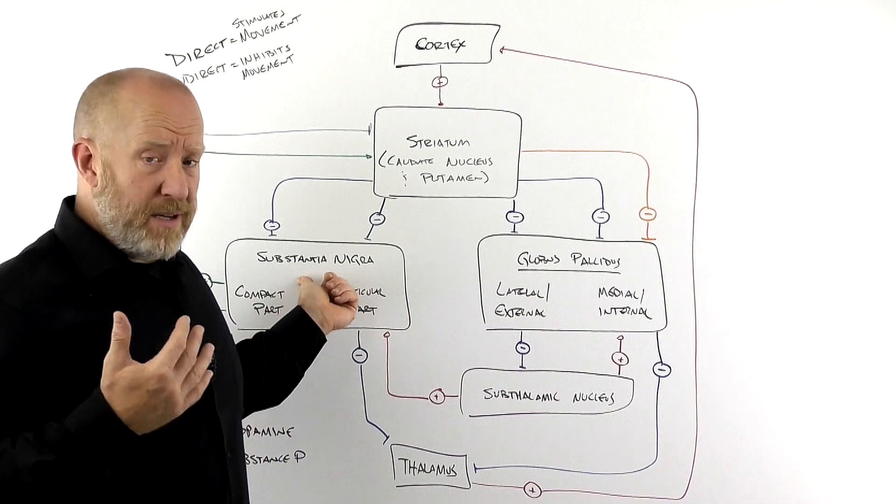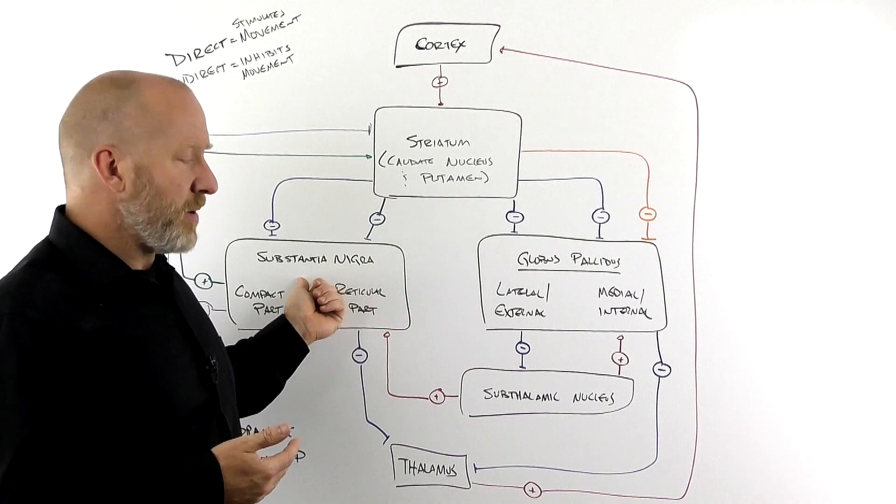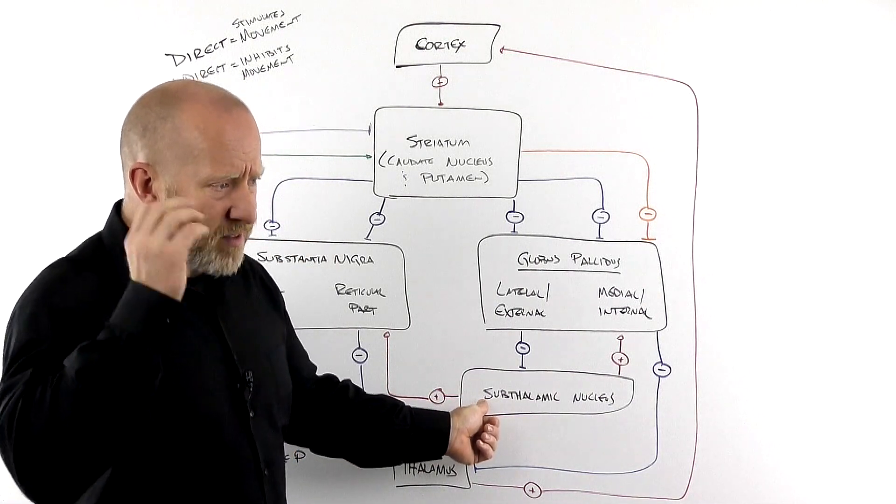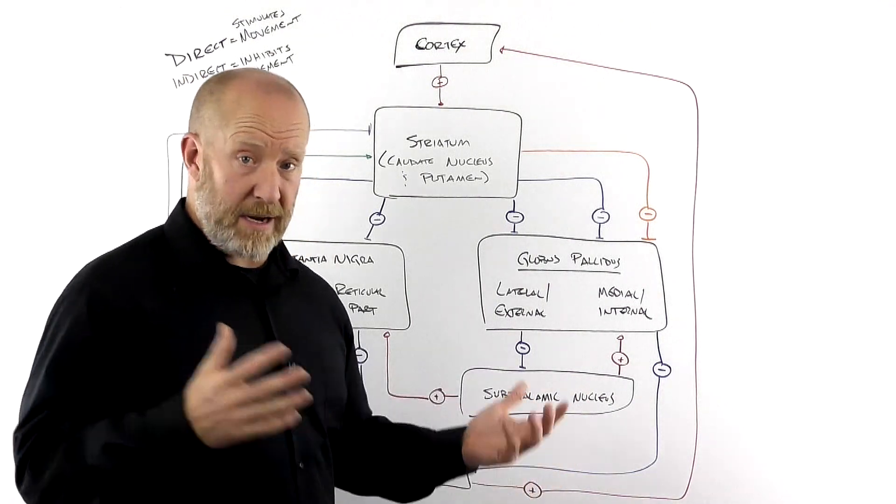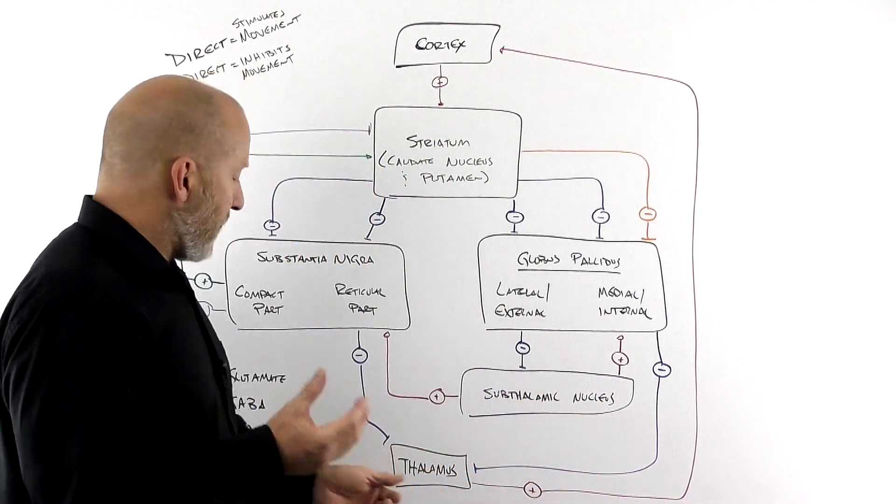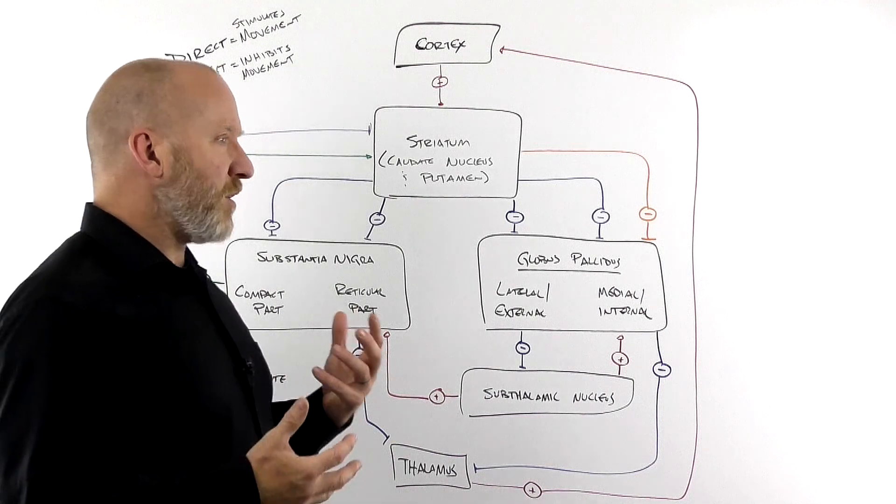We also talked about the substantia nigra, briefly, and saw where that was. And then, we didn't talk about this, but it makes sense. The subthalamic, subthalamus, the thalamus, below the thalamus nuclei. And you know what a nuclei is, it's a collection of cell bodies. And then here's the thalamus. So here's the direct and indirect pathways.